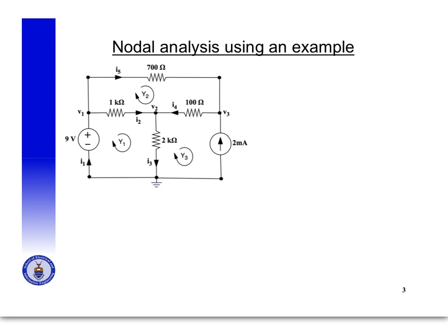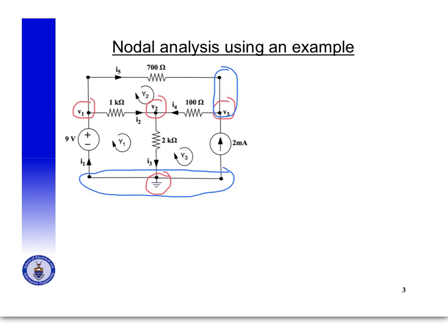In this circuit, which we're using as an example, I've already selected the reference node, marked here in red, and I've already labelled the other nodes: V1, V2, and V3. Remember that all of the dots forming the reference node are one expanded node, and similarly V2 and V1 each represent their own expanded nodes.